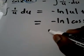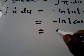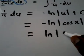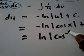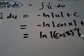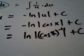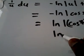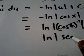And now by our properties of logarithms, we have natural log of absolute value of cosine of x to the negative one plus c. And this equals natural log of secant x plus c.